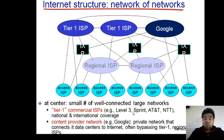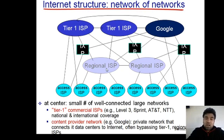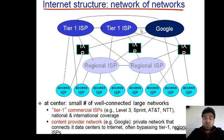Access ISPs and regional ISPs have to pay these companies for using their infrastructure to transfer data. In this diagram you can see that tier 3 ISPs are access ISPs, connected either to regional ISPs or directly to tier 1 ISPs. Regional ISPs are called tier 2 ISPs, connected with tier 1 and tier 3 ISPs. Tier 1 ISPs are very few in number because the infrastructure required to build them is very costly.